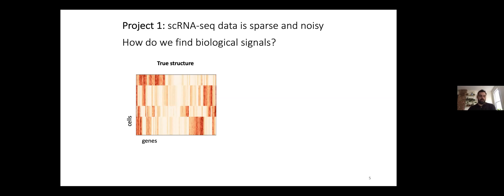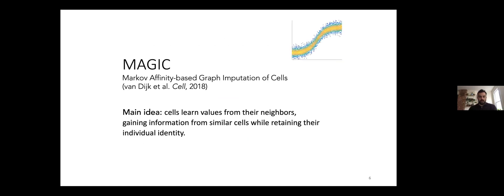This first project is based on single cell RNA sequencing. One challenge with single cell sequencing is that the data is incredibly noisy and incredibly sparse. Ideally we want the data to look like this where we have cells and genes with very clear structure. However, in reality this is what the data looks like—incredibly noisy, and in fact the majority of the data is missing. This is a problem because it obscures the underlying biology.